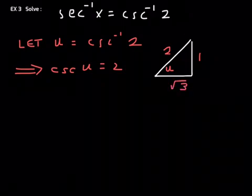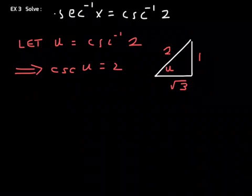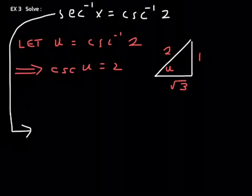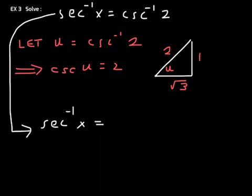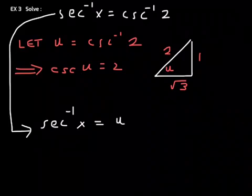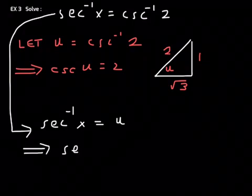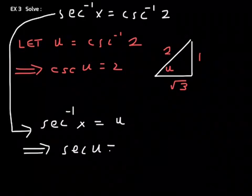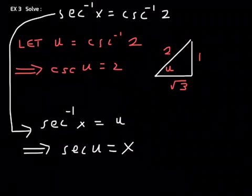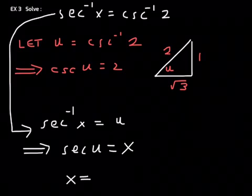So, now, we can go to our original statement here. And we can say that inverse secant of x is equal to u. That's the substitution that we made in the beginning. So, this statement now implies that u is the angle whose secant value is x. Secant of u is x. And x is what we're trying to solve for.